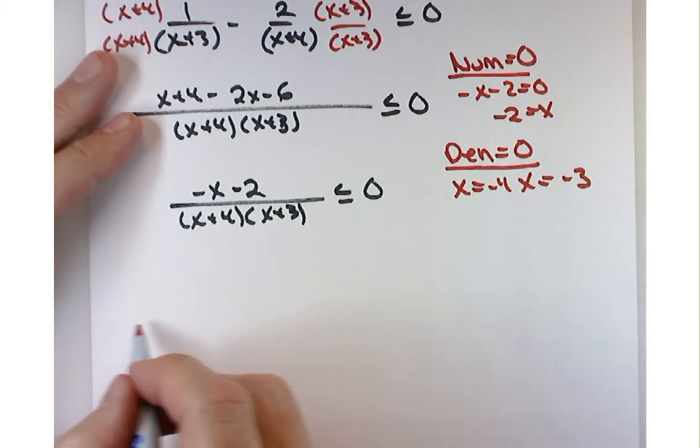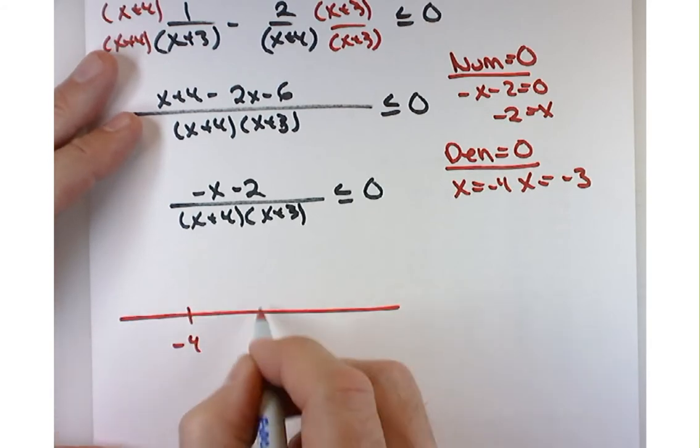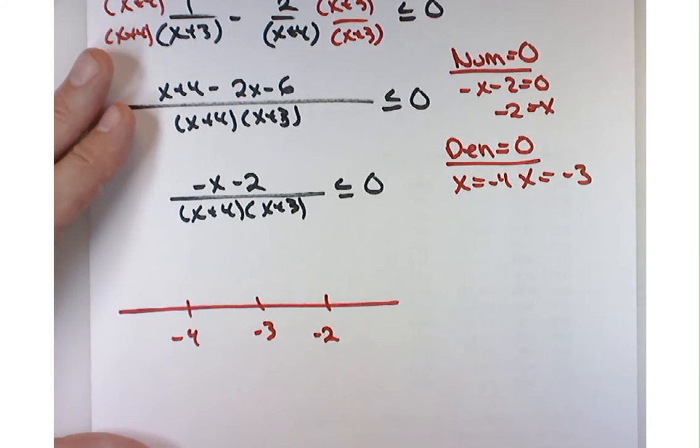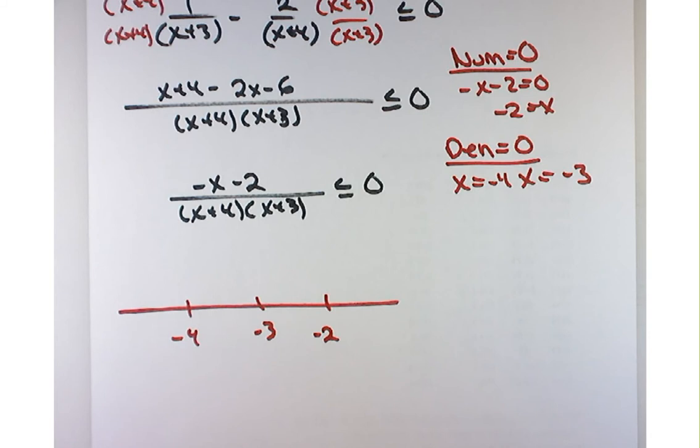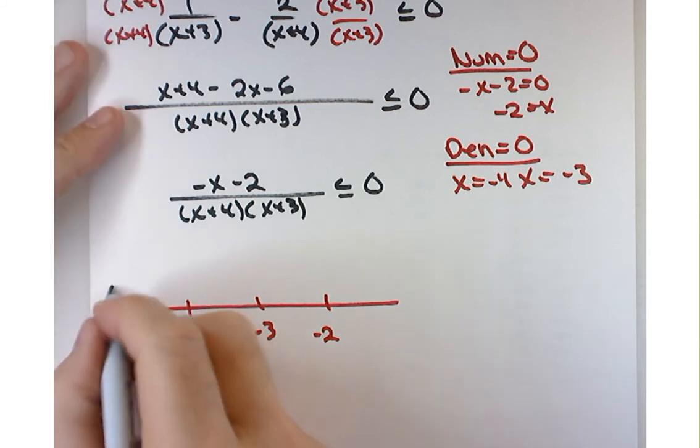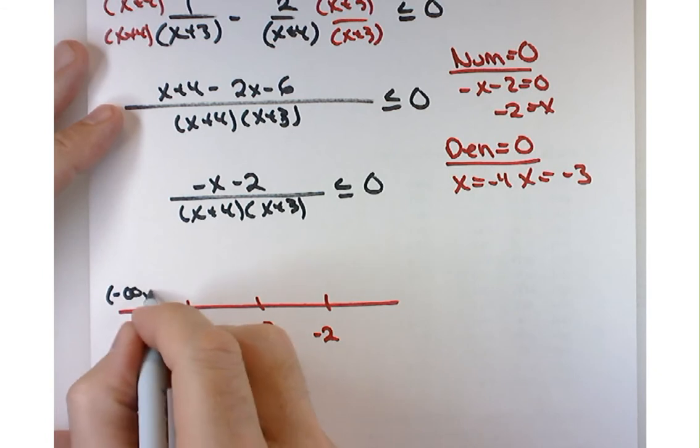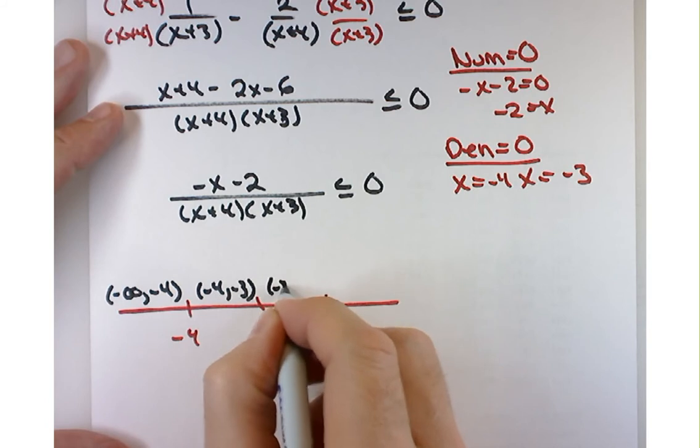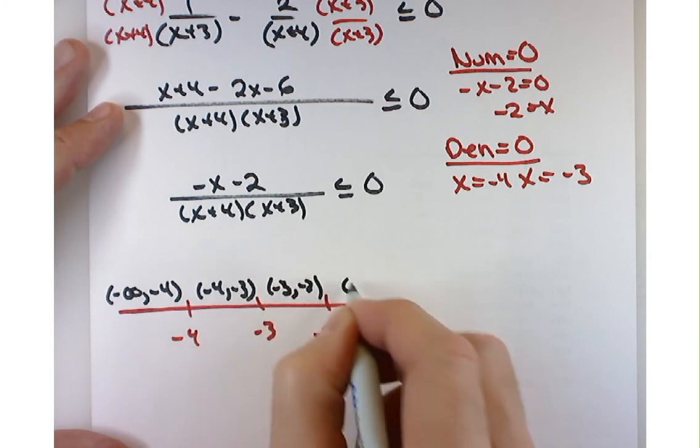Let's put these numbers on the number line. Now, this is a nice example because it's going to make you think a little bit outside the box. Now, I know that everyone wants to test points right here and now, but I made a different suggestion when we did this in class. I said, before you get around to testing points, do this first. What was it? Yeah, write the intervals. So that's negative infinity to negative 4, negative 4 to negative 3, negative 3 to negative 2, and negative 2 to infinity.